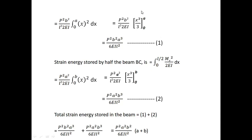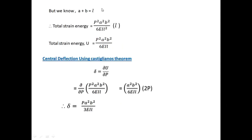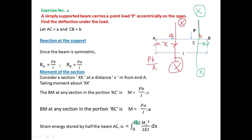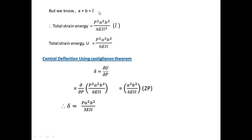Now we add both portions: total strain energy equals P²a²b²/(6EIL²) multiplied by (a³ + b³)... combining terms with a squared and b squared over 6EIL squared. Since a + b equals L, total strain energy simplifies to P²a²b² divided by 6EIL.